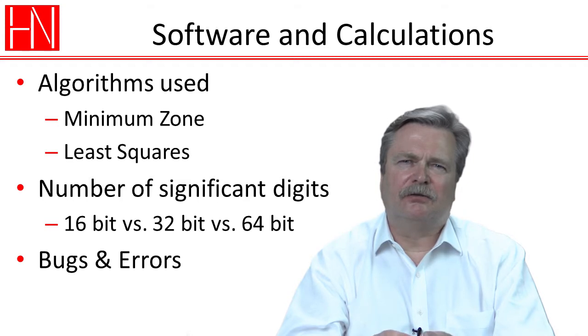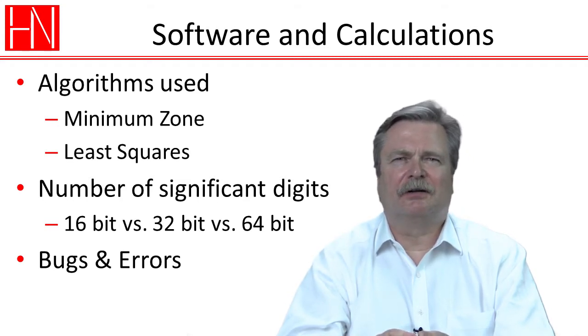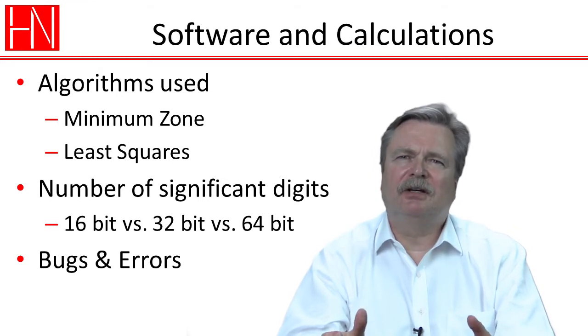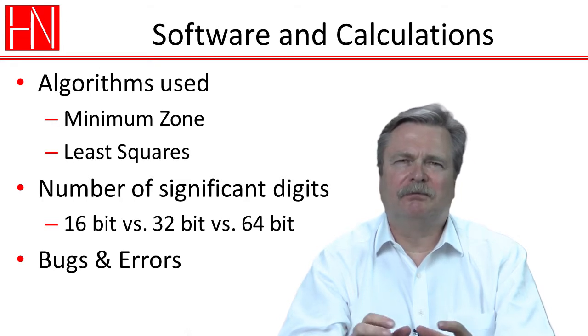The drawing indications are usually based on an algorithm called minimum zone, whereas most measuring equipment is based on an algorithm called least squares, and they fundamentally come to different results. I will show you how those work and what the difference is between them.